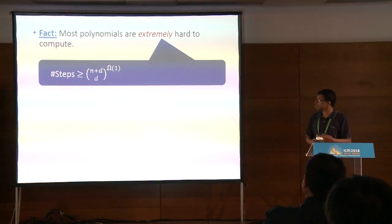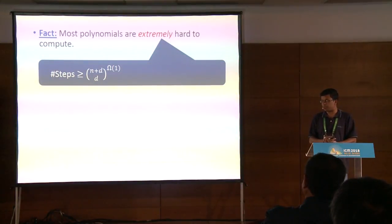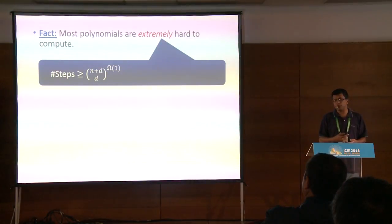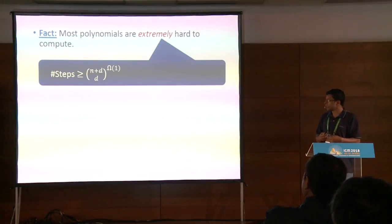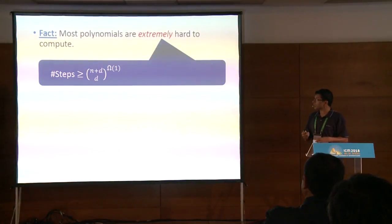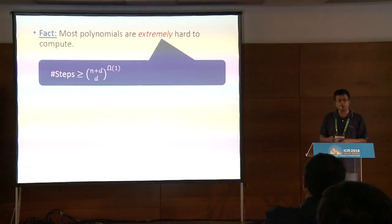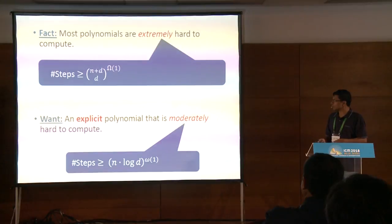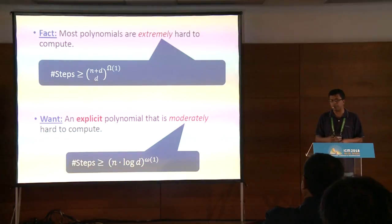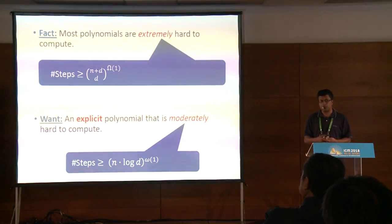It's a fact we know from the time of Shannon around 1950 that most polynomials are extremely hard to compute, just like for boolean functions. Essentially the same argument holds over infinite fields with a small modification. Here 'extremely' means essentially comparable to the number of monomials. What we would want is an explicit polynomial that is ideally extremely hard to compute, but we'd be happy with a moderately hard one.